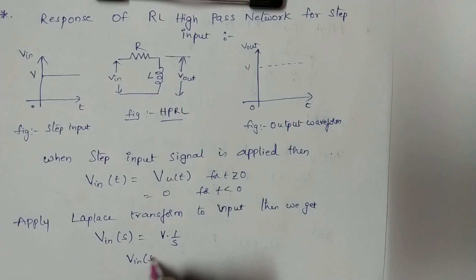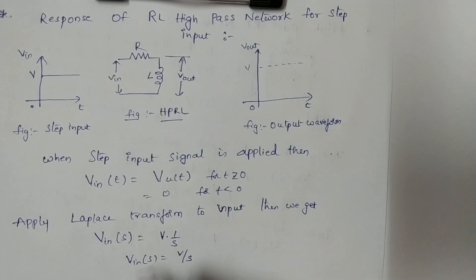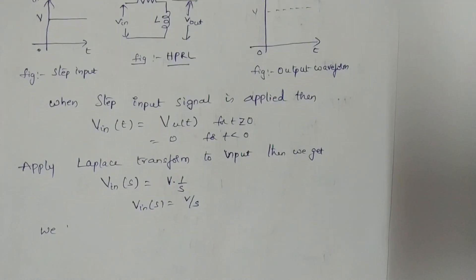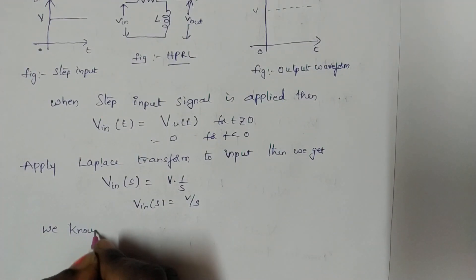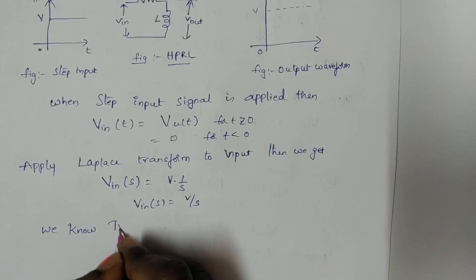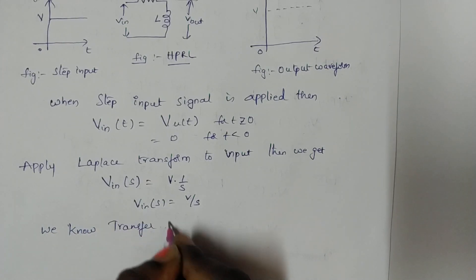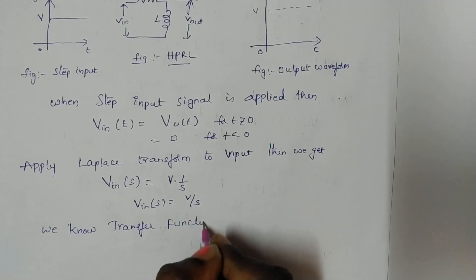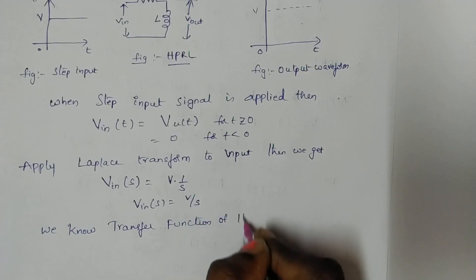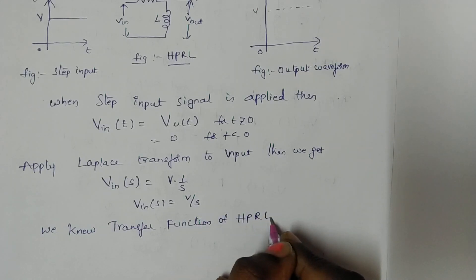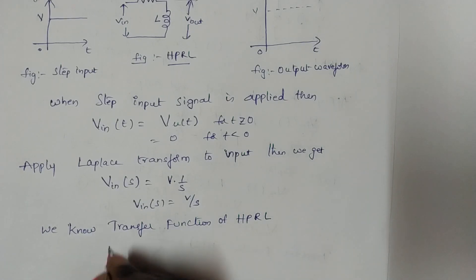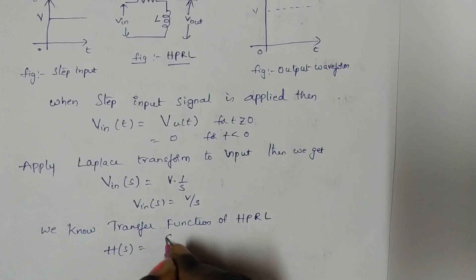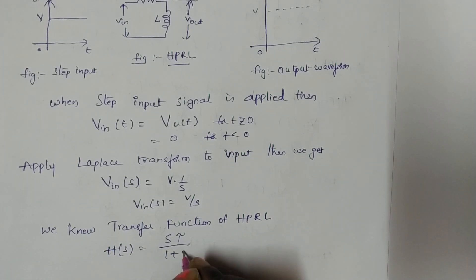V_input(s) = V/s. We also know the transfer function of the high-pass RL network. The transfer function is: H(s) = sτ / (1 + sτ).